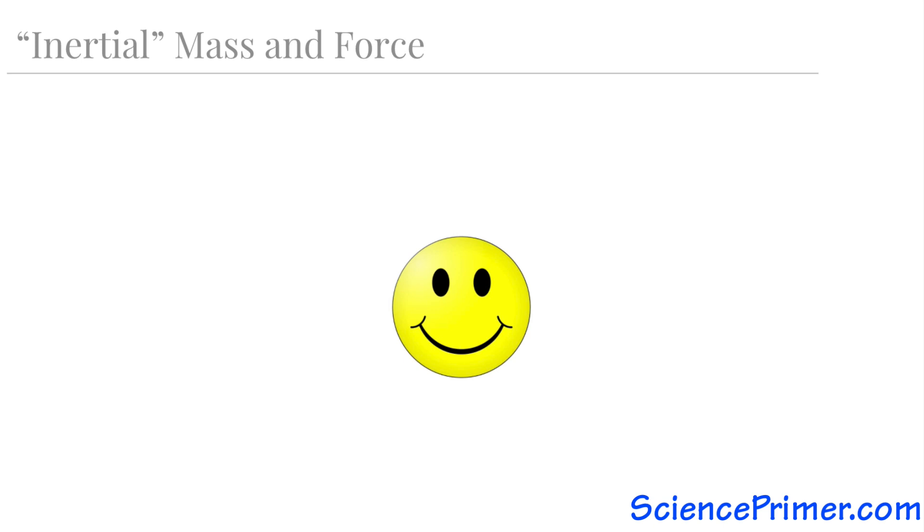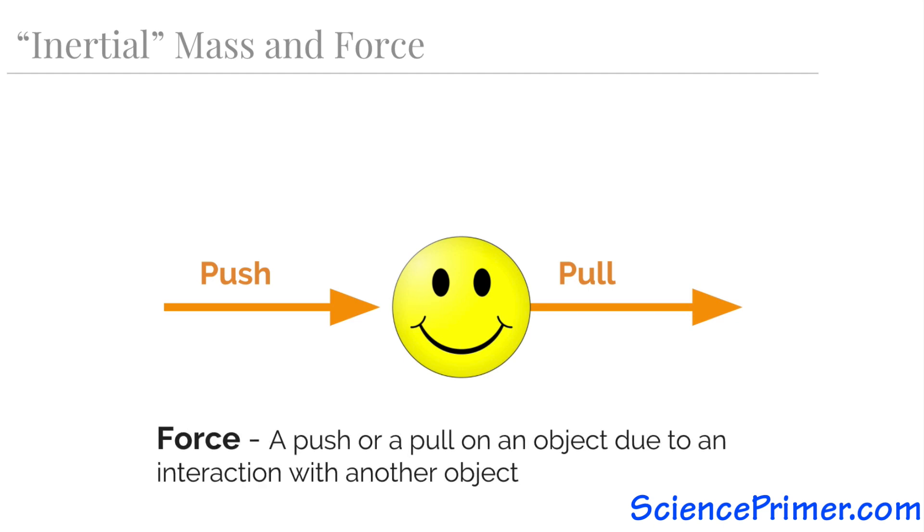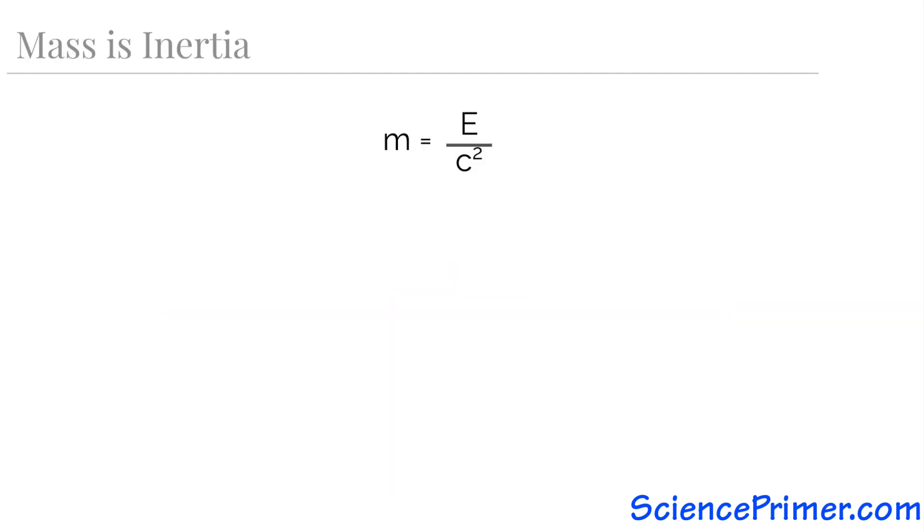So what is change in this context? Change comes from a force being applied to an object. Any object that has a push or a pull exerted on it by interacting with other objects experiences a force. A plain English definition of a force would be a push or a pull on an object due to an interaction with another object. This is why I said that using the term inertial mass or rest mass is useful, but not accurate. More mass, inertia, and the capacity to resist change are three ways of saying the same thing.